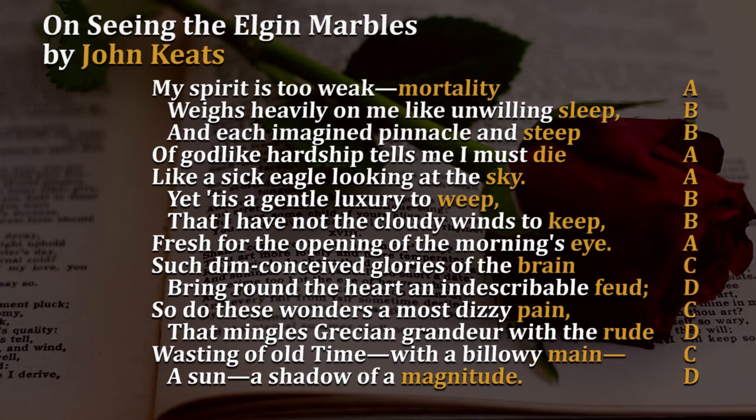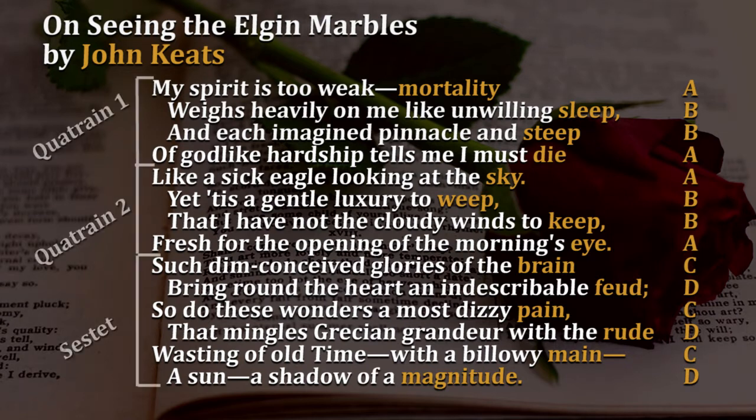Following that, there's a six-line stanza called a sestet, consisting basically of three and three — two tercets — and that rhymes C, D, C, D, C, D, or sometimes C, D, E, C, D, E.